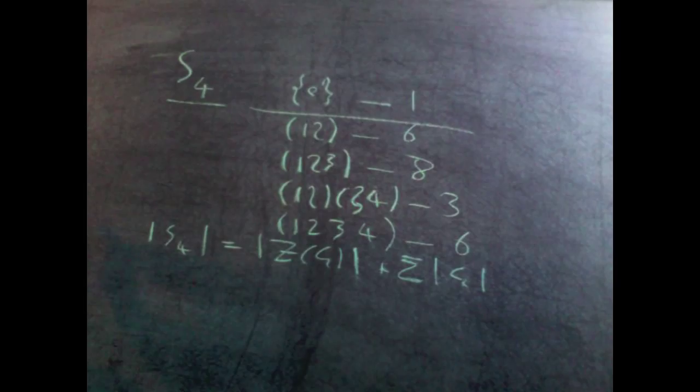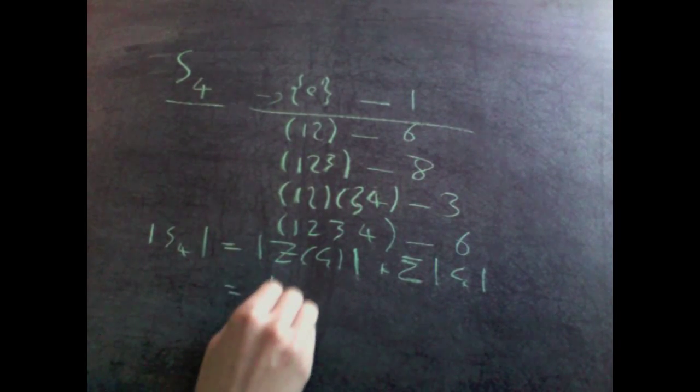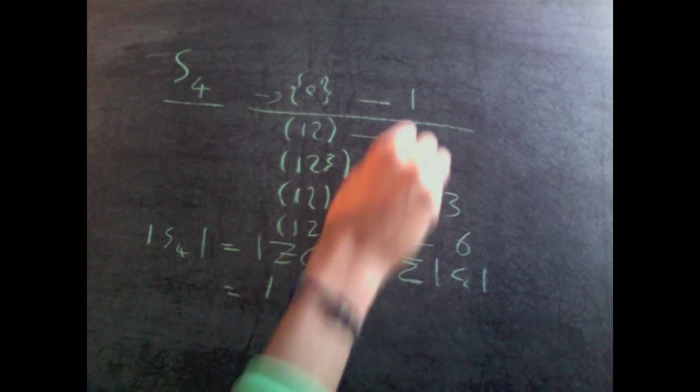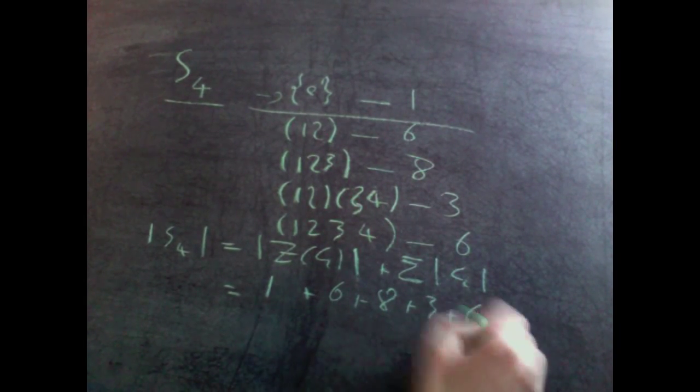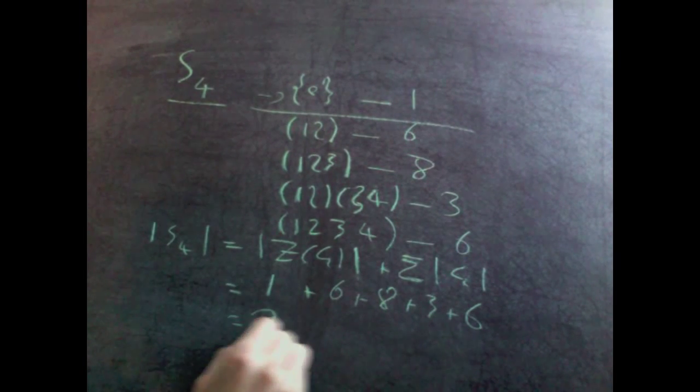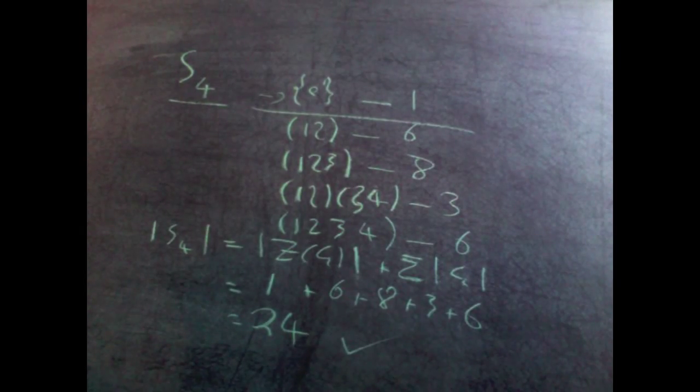There's only one central element in s4 and that's the identity. Nothing else commutes with everything else. That's the sum of the size of the rest: six plus eight plus three plus six, which is 24.